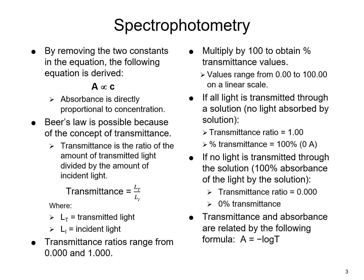If all the light is transmitted through the solution — meaning no light is absorbed — then the transmittance ratio is 1.0 and the percent transmittance is 100. If no light is transmitted through the solution, then the transmittance ratio is 0, meaning 100 percent of the light has been absorbed by the solution.